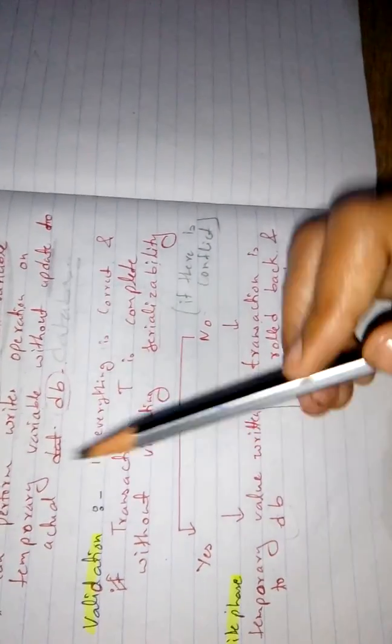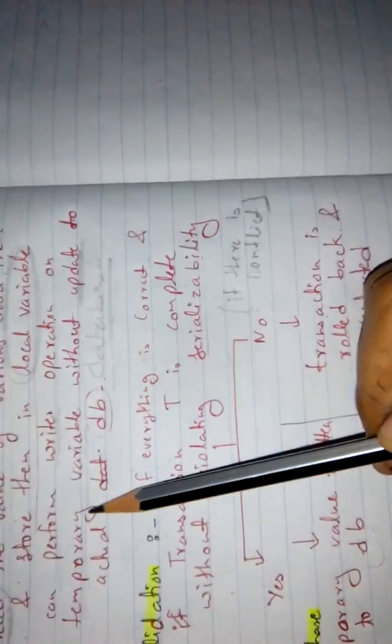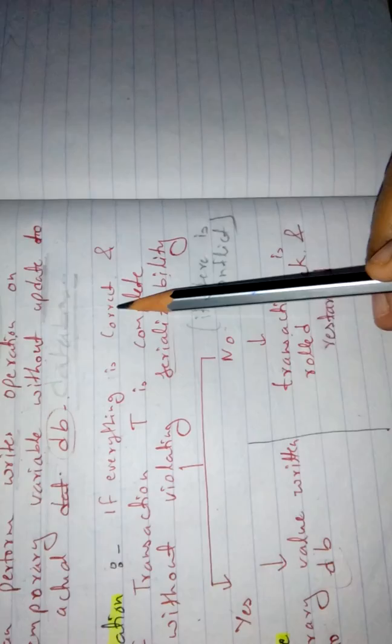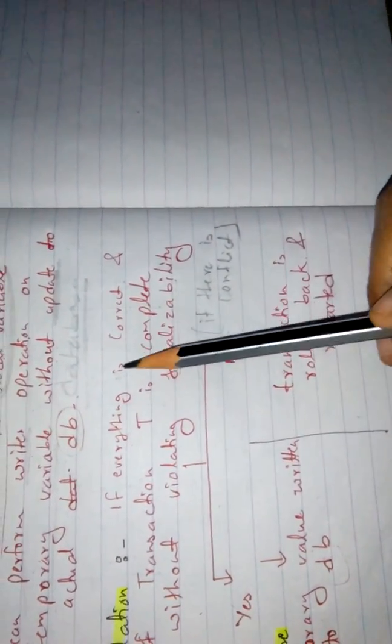Then comes the validation phase. In the validation phase, we check whether the read or write operations we performed are correct. If everything is correct — the transaction is complete, has no serializability rule break and no conflict — then it proceeds.